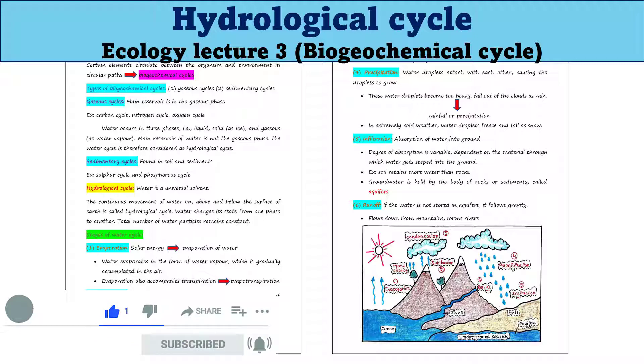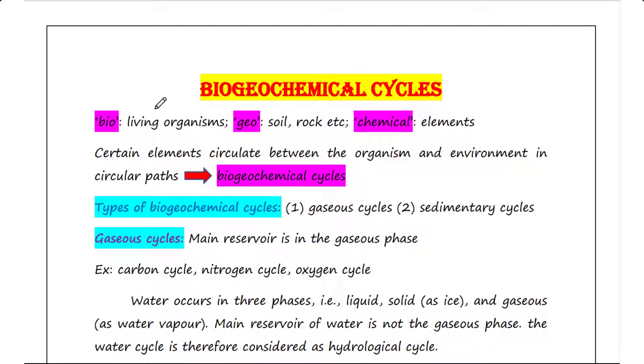The term biogeochemical is derived from three words: bio, which means living organisms; geo, which means soil, rock, etc.; and chemical, which means elements.